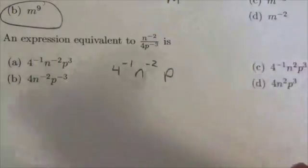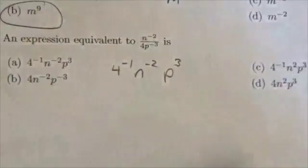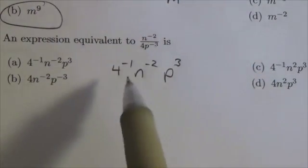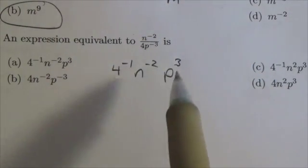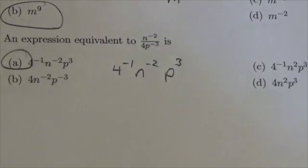Now that's going to cause it to reciprocate. I don't really have to do anything special to that. That's already going to make that positive when you bring it up to the numerator. So we're looking at four to the negative one, n to the negative two, p cubed, and that is the A option.